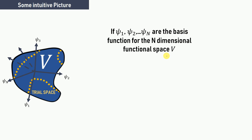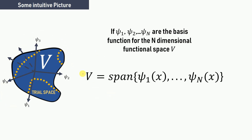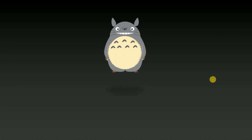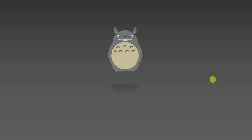We can write V as a span of all these basis functions, similar to how i, j, k span the 3D geometric space, and ψ_1, ψ_2, ..., ψ_n span the trial space.